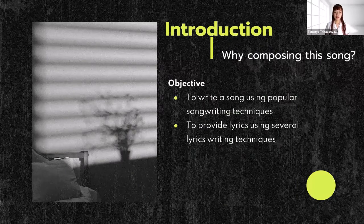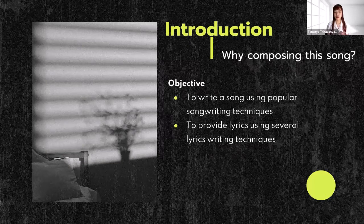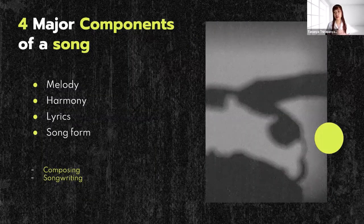The major components of a song are: melody — the pitch and note duration combined; harmony, for example chords and rhythm sections; lyrics — the words put in the song; and song form. Each component alone cannot be called a song, but music can be created with or without those components. The word 'composing' means creating music without lyrics, while 'songwriting' includes lyrics.